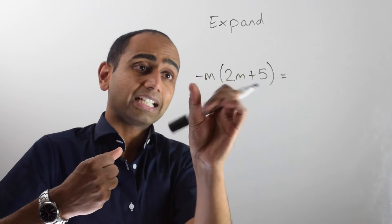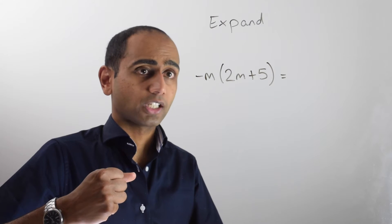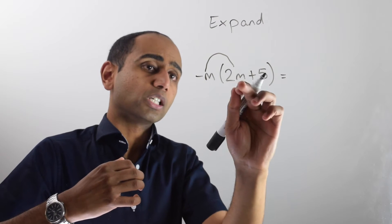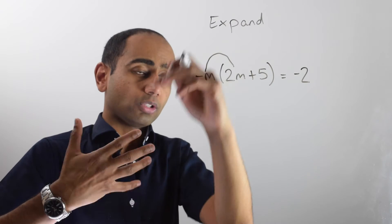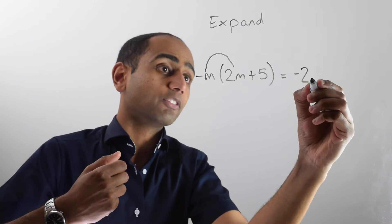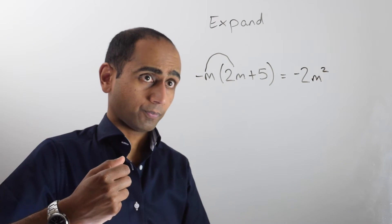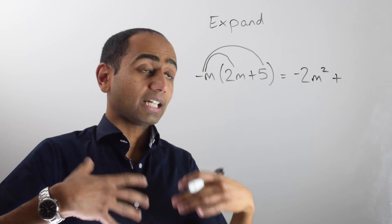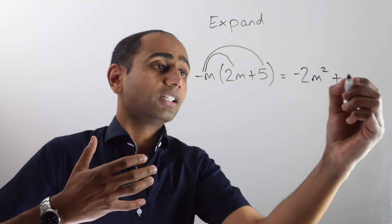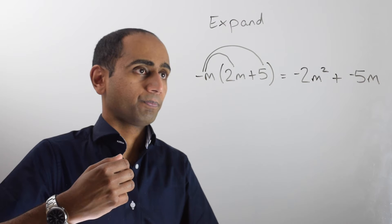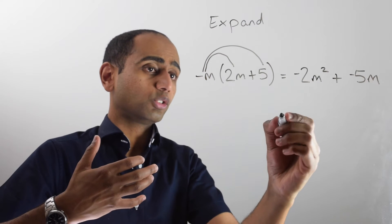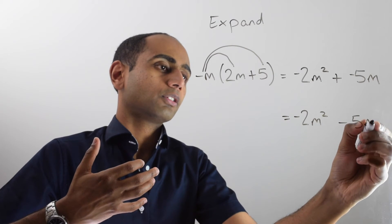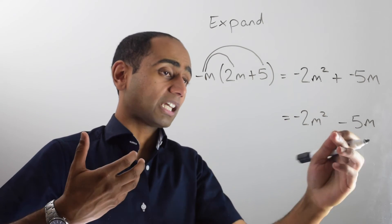In this example, I've got negative m times two m plus five. If I multiply the negative m by the two m, I'm going to get negative two m squared — negative two, number first, times m times m gives me m squared. I'm then going to add on what I get when I do negative m times five, and negative m times five is the same as negative five m. We could write this as negative two m squared minus five m. Remember, adding a negative is just the same as taking away.